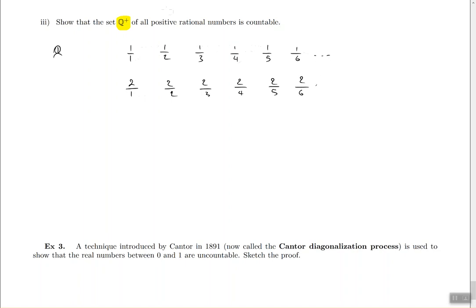There are more rational numbers I'm not writing yet, but that's how the table starts. In this way I'm going to organize every possible positive rational number. On the third row it's going to be 3 on all the numerators, and the denominators 1, 2, 3, and so on tell me the position in that row. Then the fourth row: 4 over 1, 4 over 2, and so on.